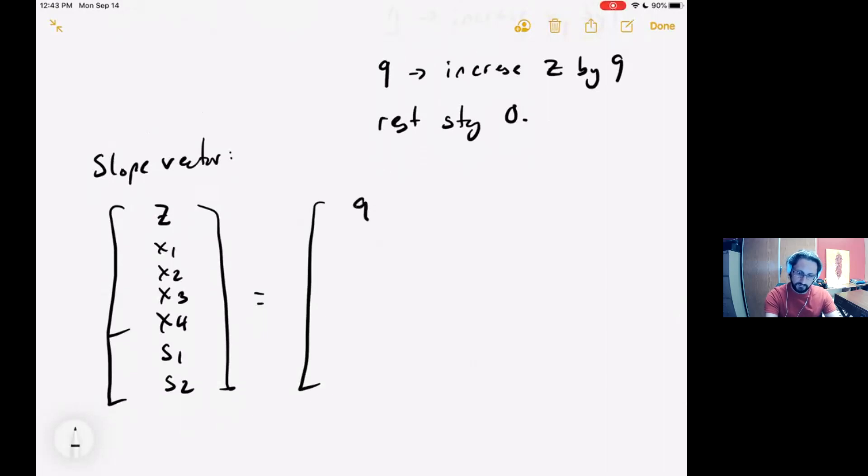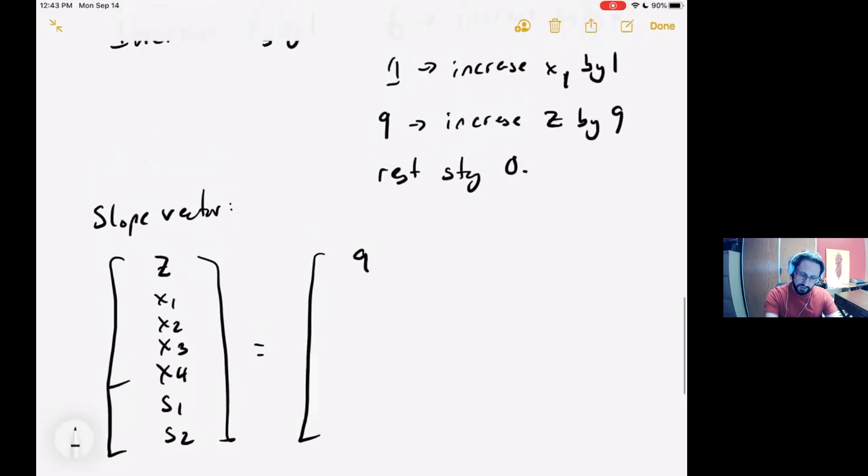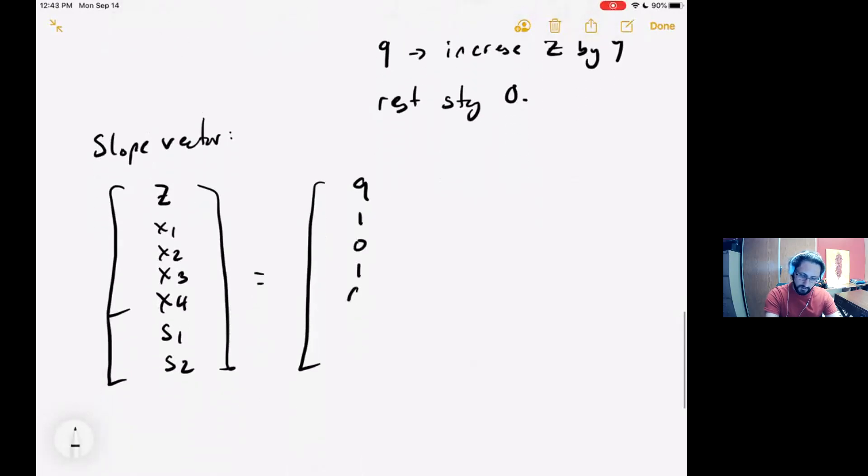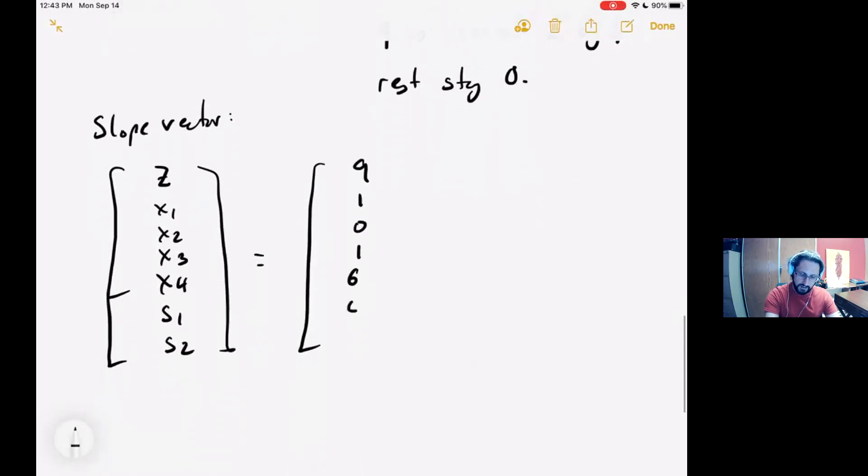That looks like: How much is z changing with respect to x3? 9. How much is x1 changing? 1. x2 is not. x3 is changing by 1. x4 is changing by 6. And these two slack constraints, slack variables are not changing at all. This is the slope vector based on x3.